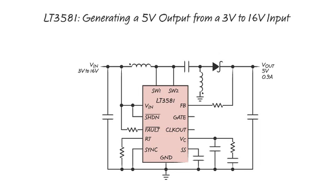This third drawing shows a SEPIC converter using the LT3581. Here the input can span from 3 volts to 16 volts, while the output is a fixed 5 volts. This circuit can provide up to 900 milliamps of output current.